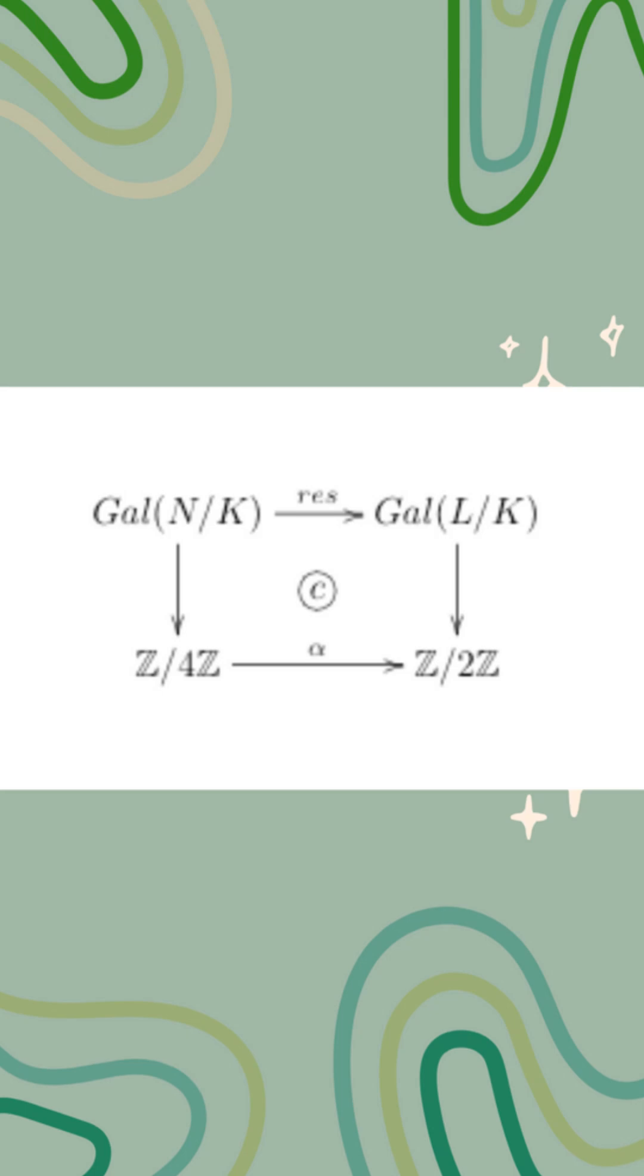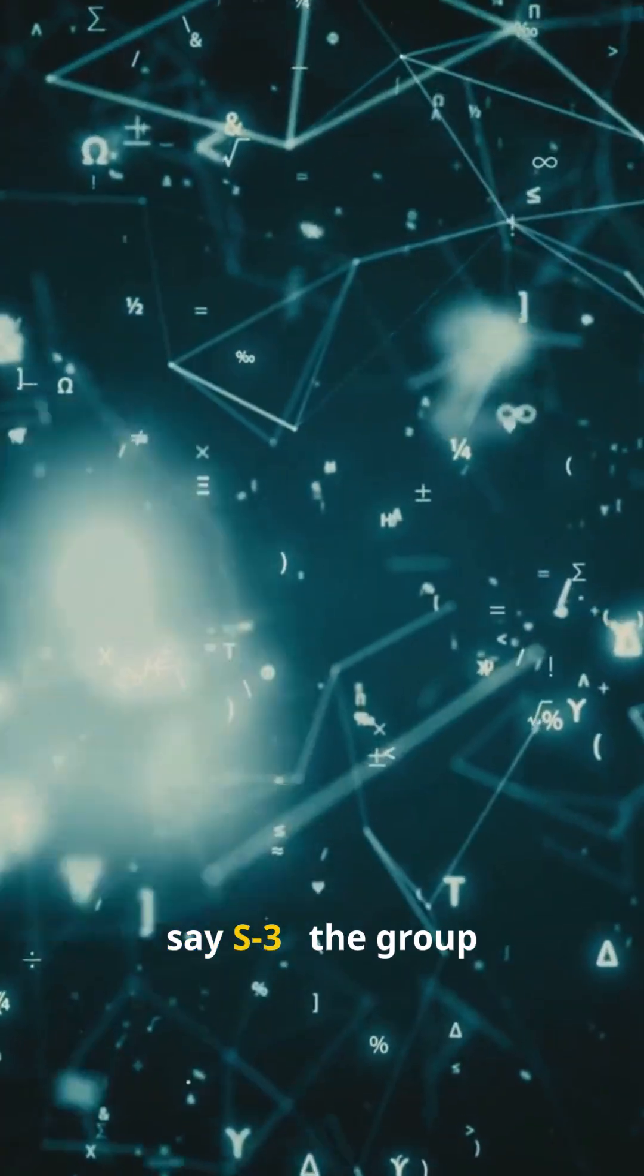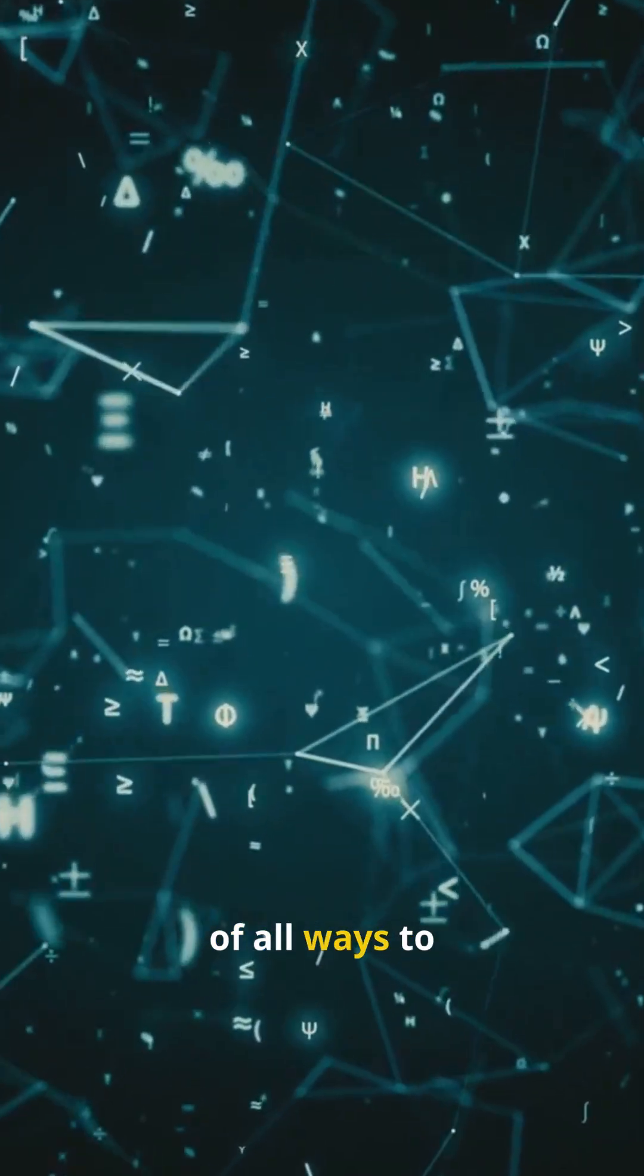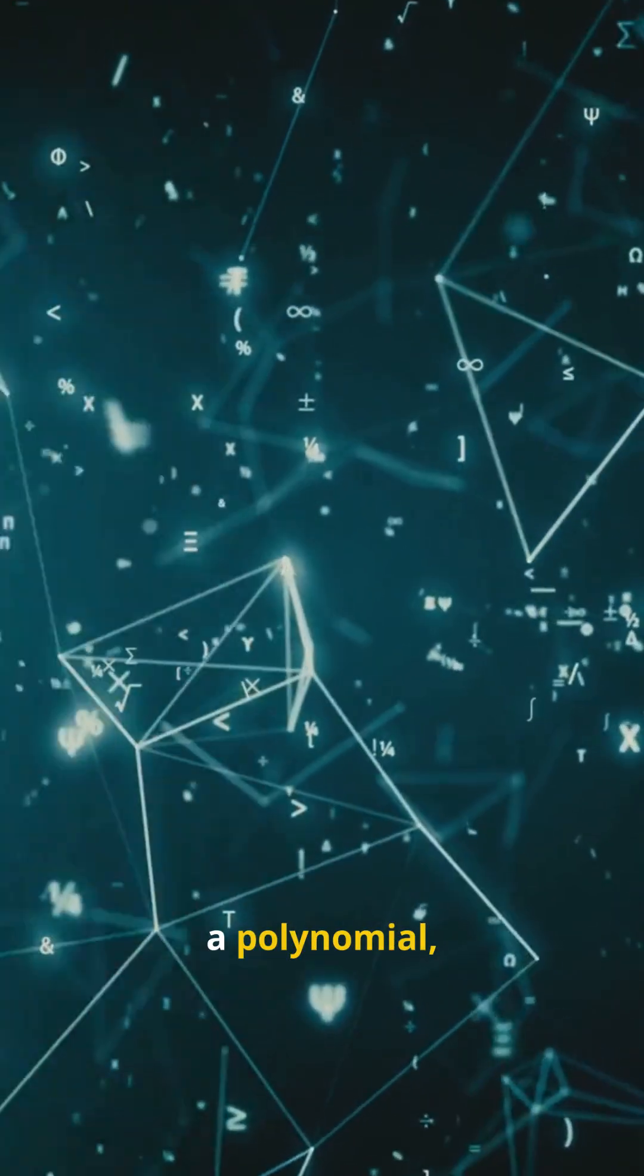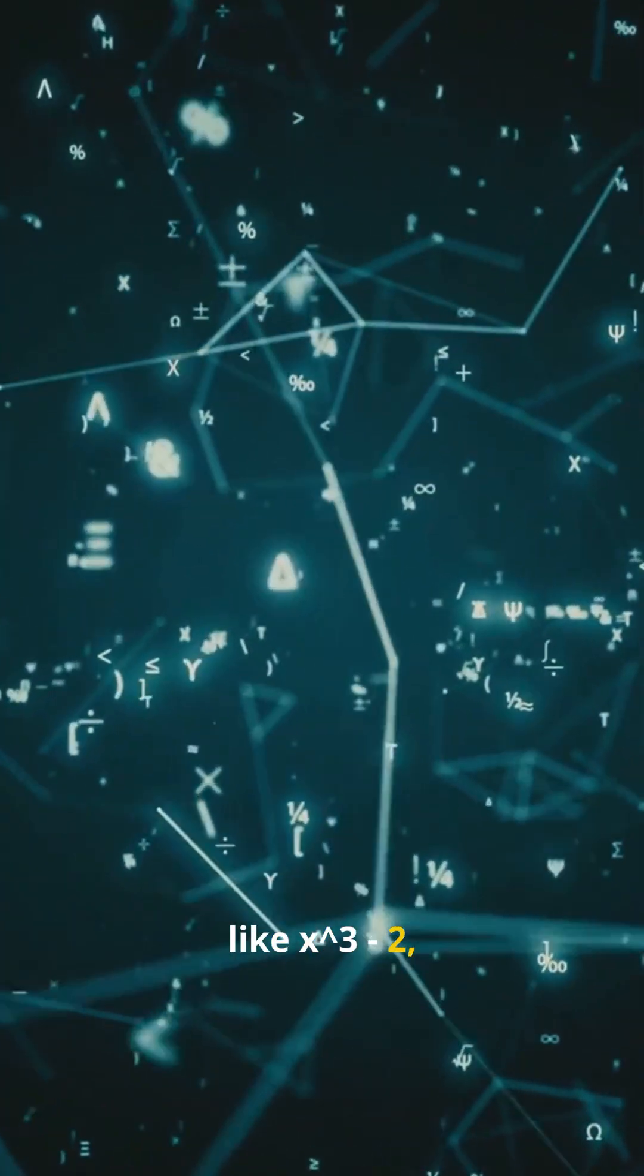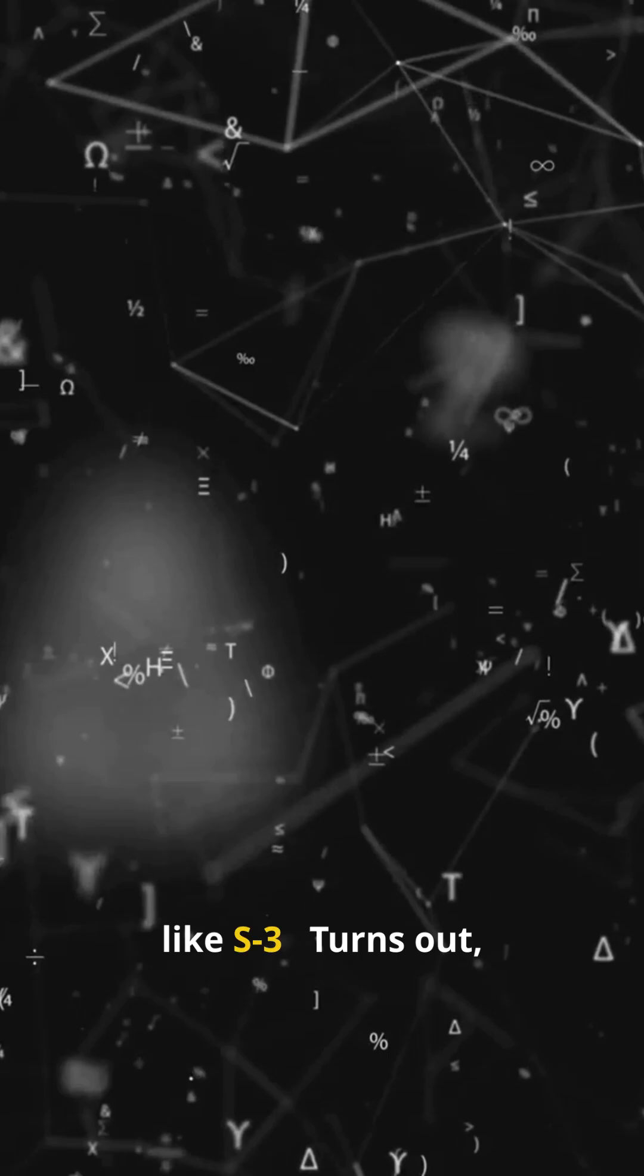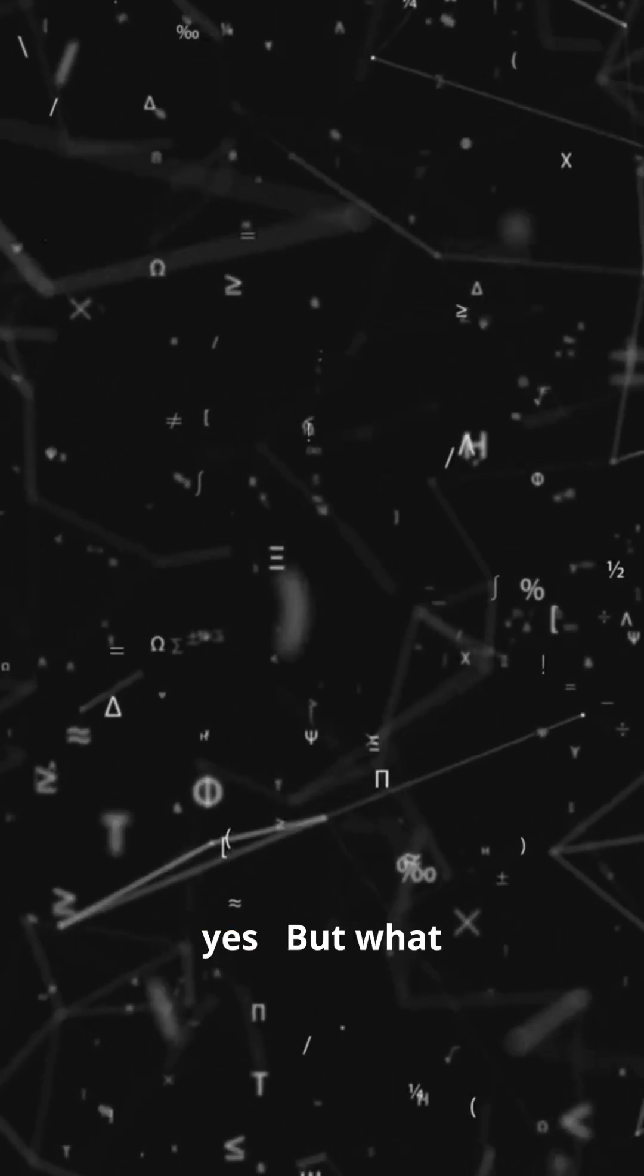Okay, let's break that down. Now imagine you have a group, say S3, the group of all ways to shuffle three things. Does there exist a polynomial, like X cubed minus two, whose solutions shuffle around just like S3? Turns out, for S3, yes. But what about every possible group?